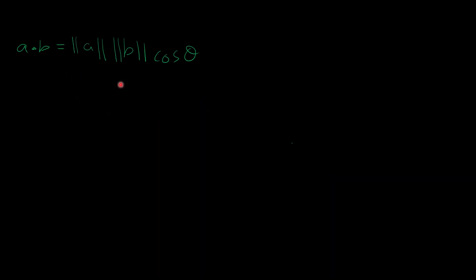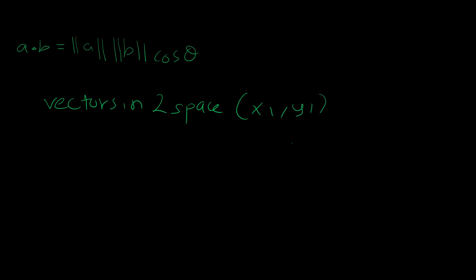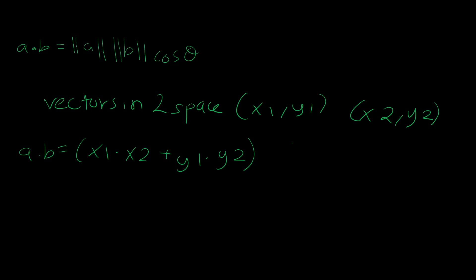We use this formula to calculate the dot product between two vectors when we are given the angle between their tails. But when we are not given the angle, and we're given vectors in two-space — for example a vector (x1, y1) and another vector (x2, y2) — we compute the dot product as x1 times x2 plus y1 times y2.